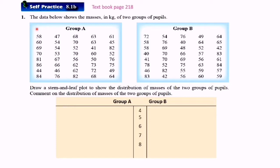If you look at the data for group A and group B, the smallest number is 40. The largest number is 86. So for the stem here you start from number 4 to number 8.